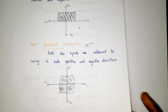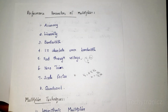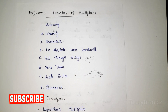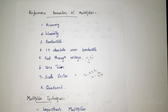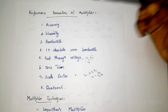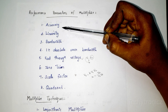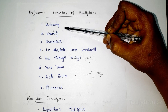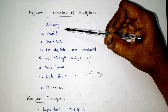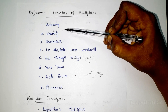Next we discuss the performance parameters of the multiplier. The first performance parameter is accuracy, which is the maximum deviation of the actual output level from the ideal output. This is also called total error.